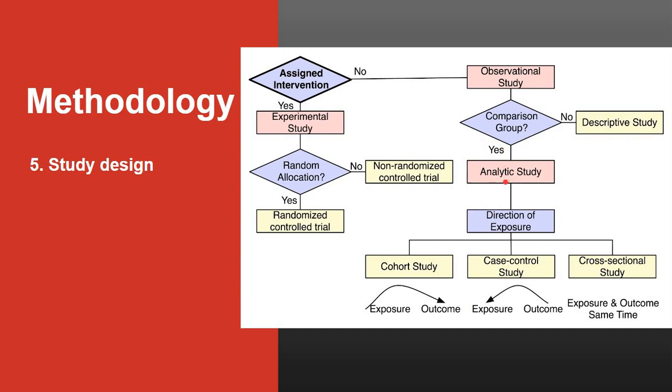If you have a comparison group, then that is an analytical study. In analytical study, the next question is what is the direction of exposure? If you start from exposure to outcome, that is a cohort study. If you start from outcome to exposure, that is a case control study. If you are measuring exposure and outcome at the same time, that is a cross-sectional study. Cross-sectional studies are otherwise called prevalent studies.